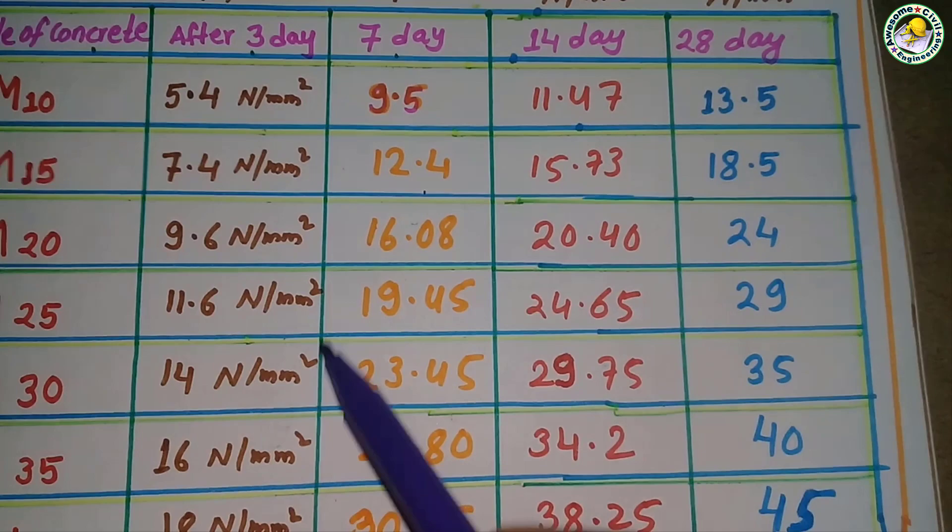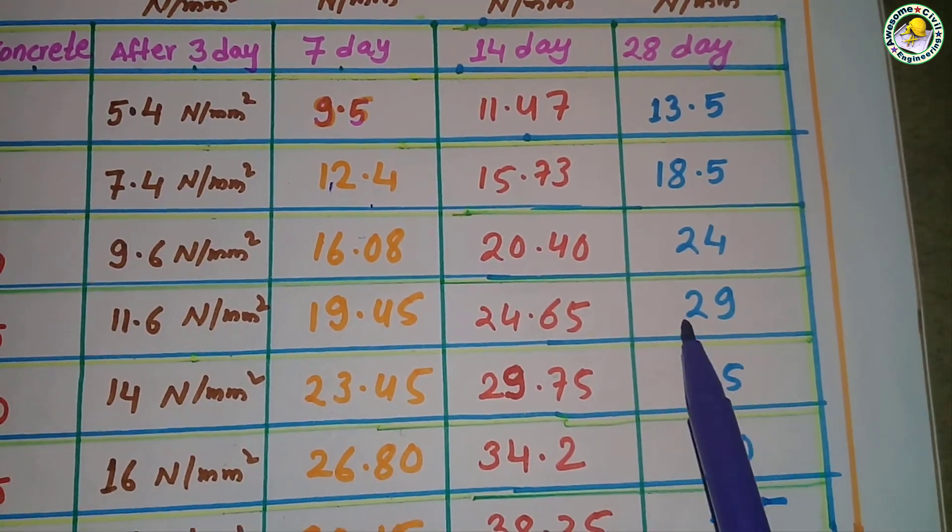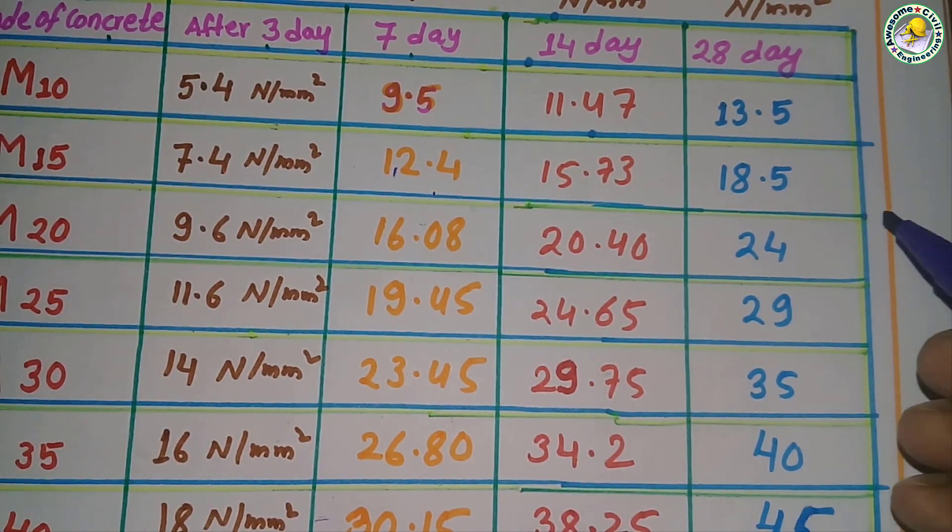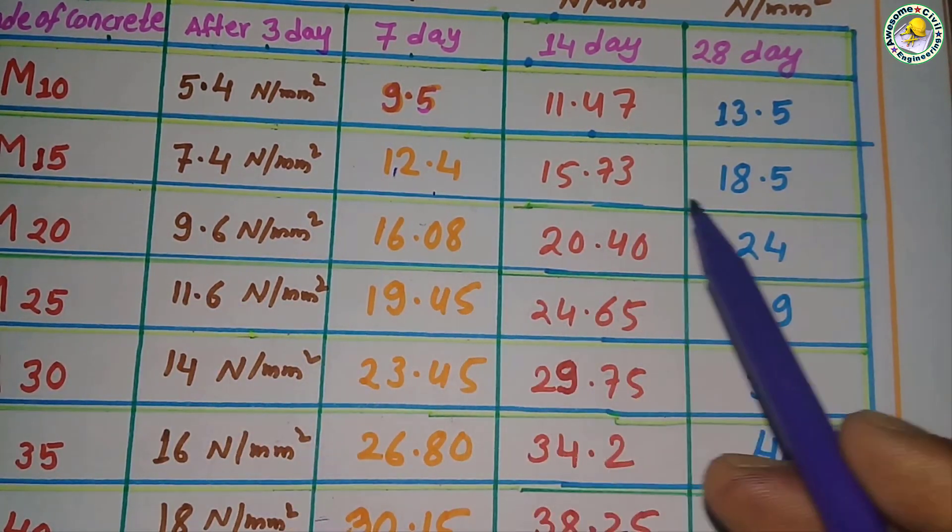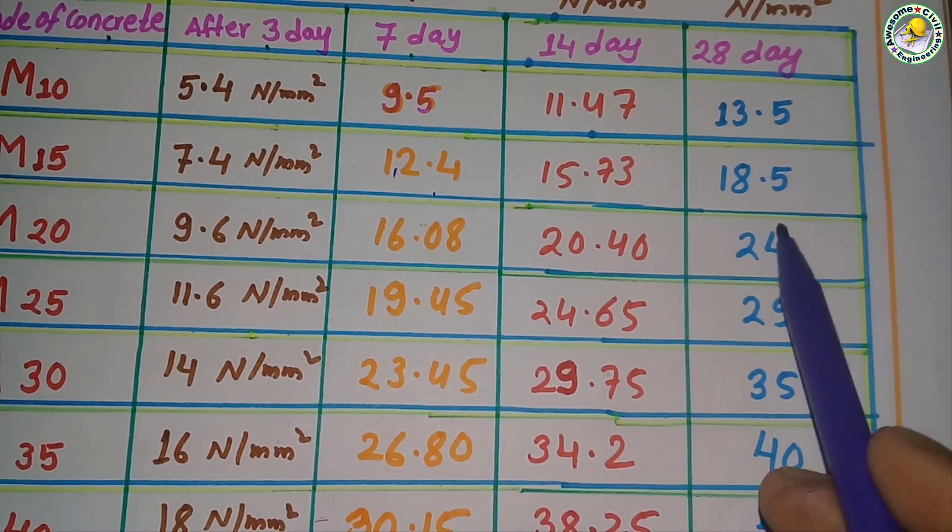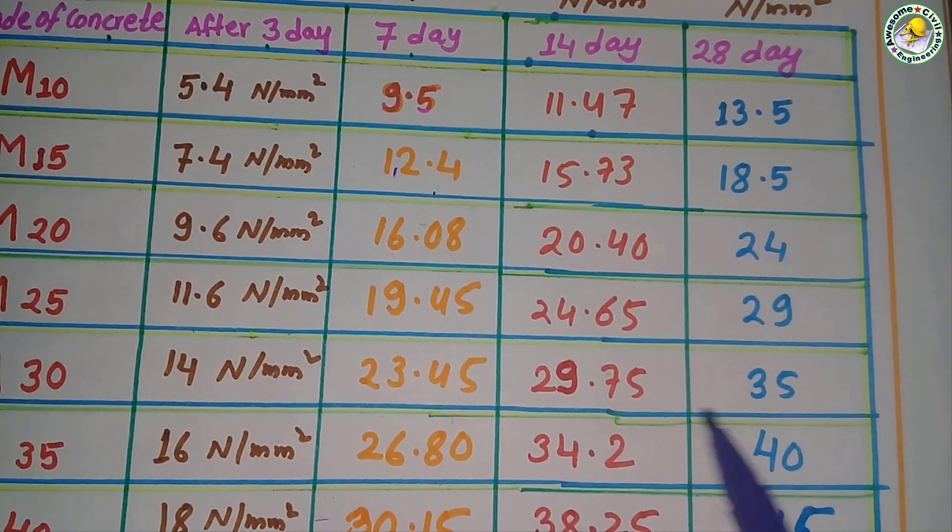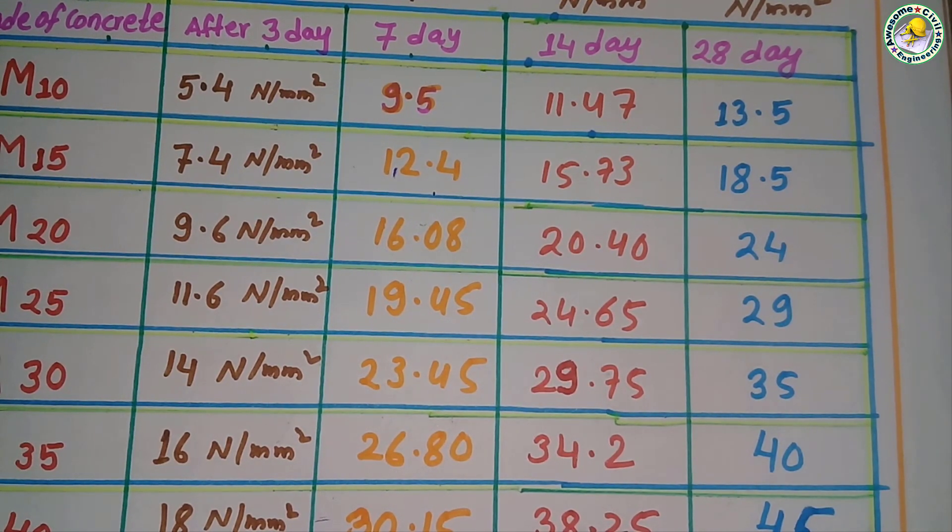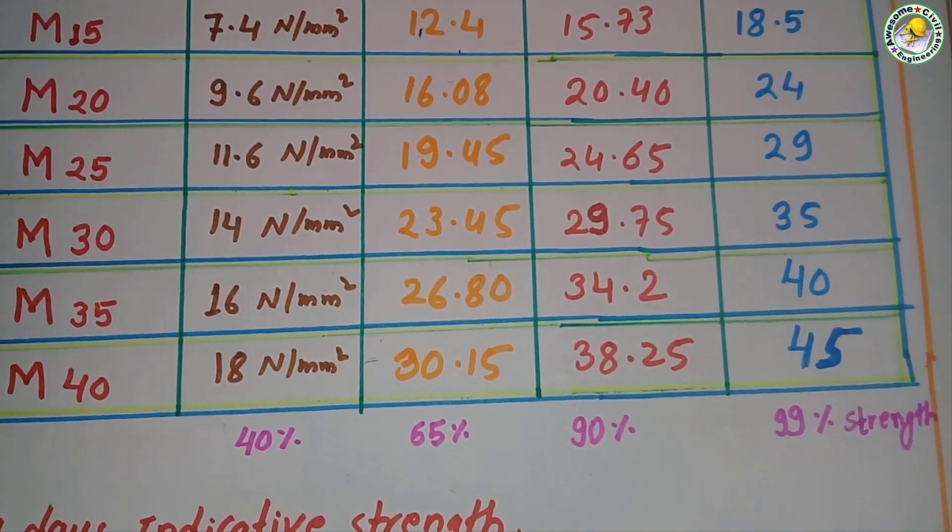In three days report, here is the seven days report, here is the 14 days report, and the last 28 days report. In this report you can see that for M10, 28 days report is 14.5; for M15, 18.5; M20, 24; M25, 29; M30, 35; M35, 40; and M40, it's 45. The report rises plus or minus 15 percent.